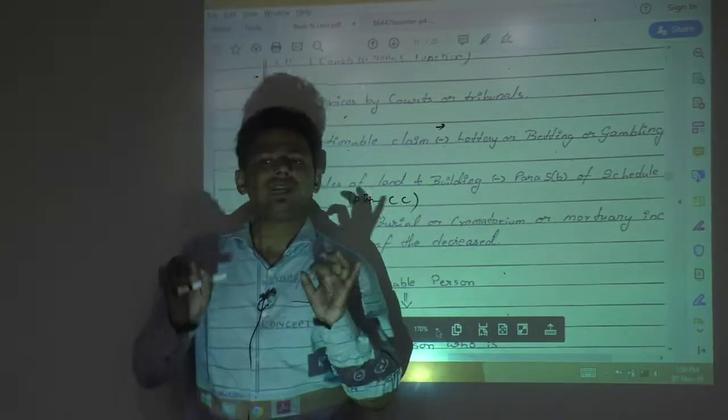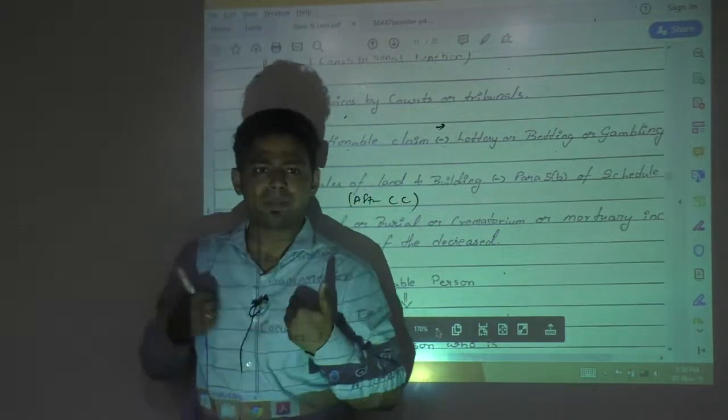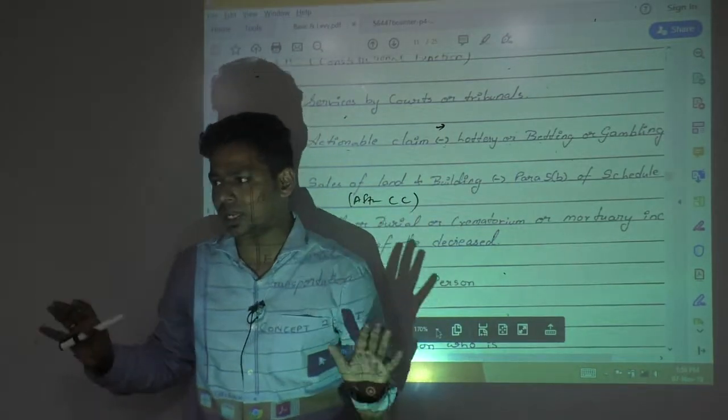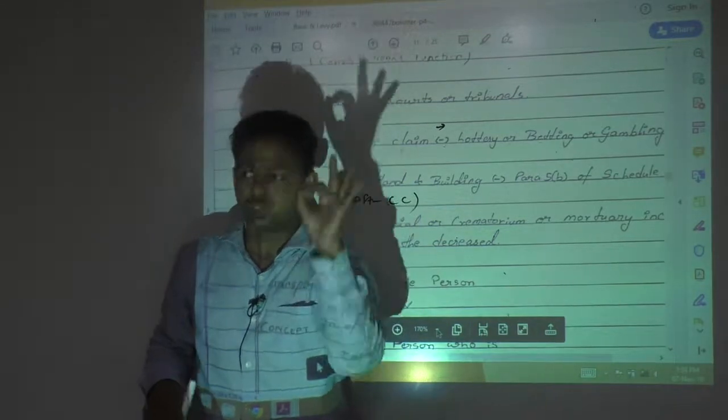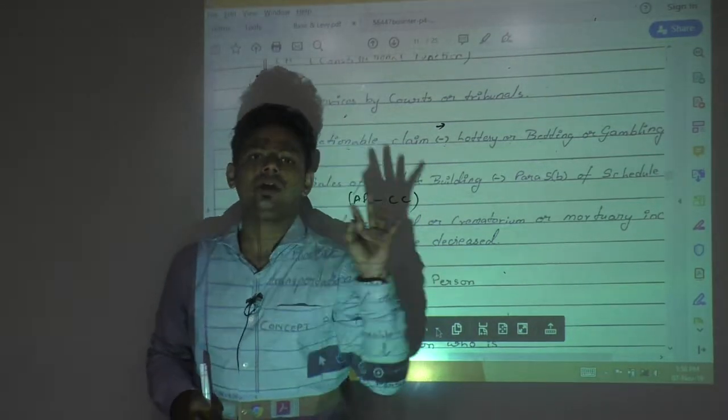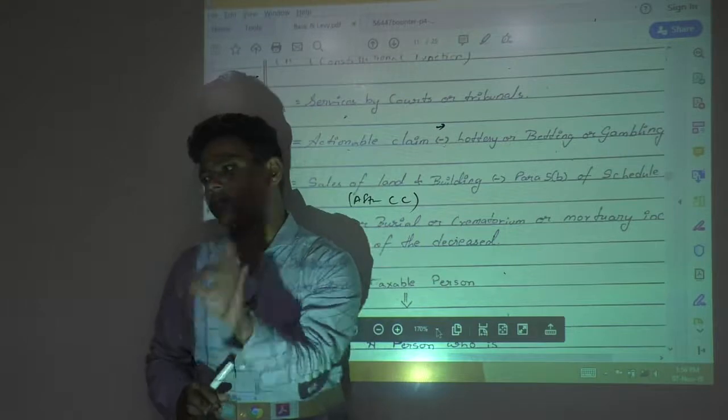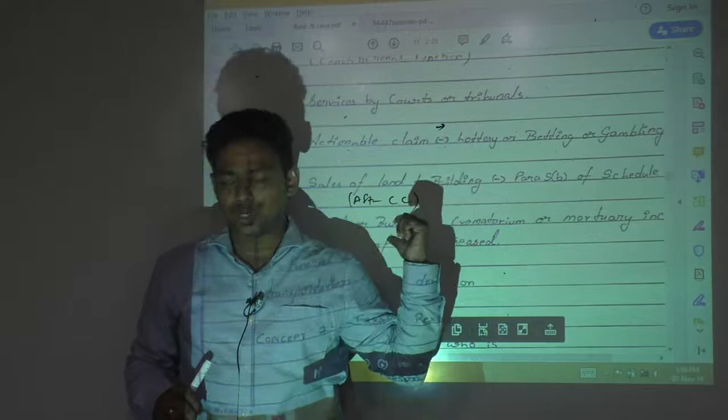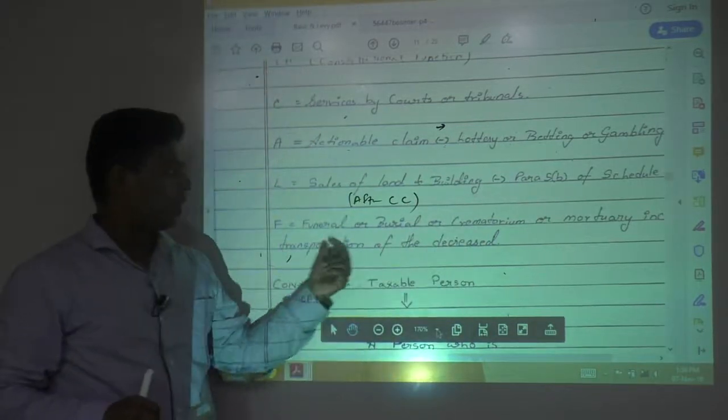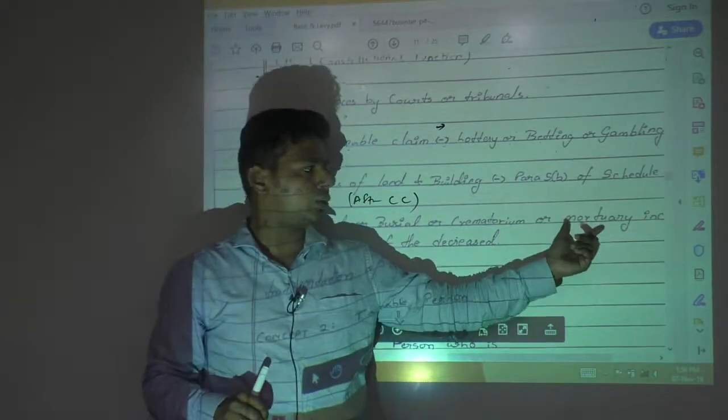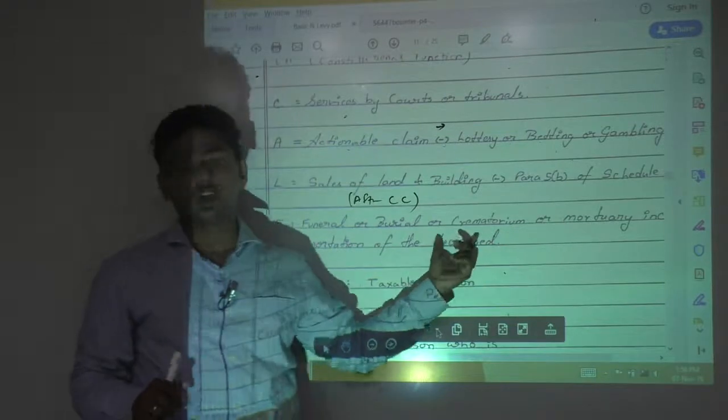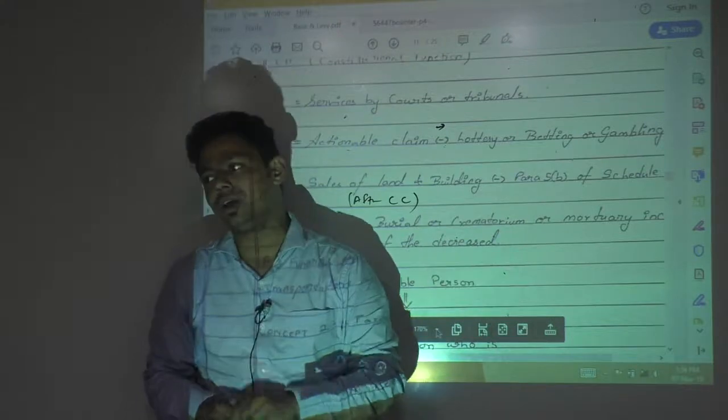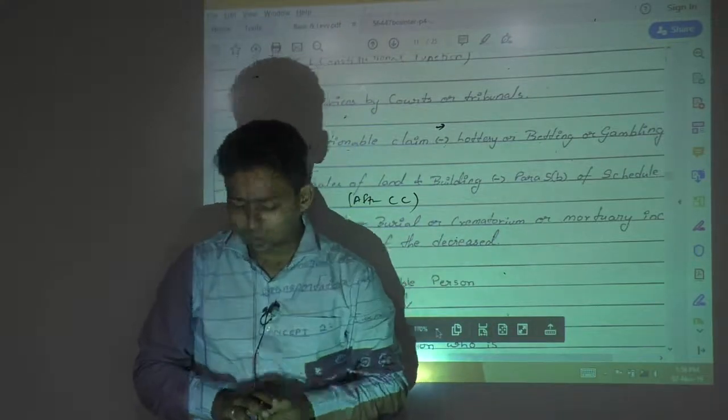As I told you earlier also, after death, from birth we are paying tax. At least government should allow us to die happily without paying any tax. So after your death, whatever rituals are going to happen, in those rituals government is not imposing any tax. Because it is covered under section 7.2, Schedule 3. Funeral, burial, crematorium, mortuary, including transportation of deceased bodies is not taxable because it is covered under schedule 3.